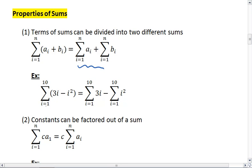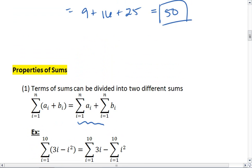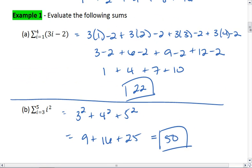For example, if I have the sum from i equals 1 to 10 of 3i minus i squared, I can split this apart into the summation from i equals 1 to 10 of 3i, minus the summation of i equals 1 to 10 of i squared. There's a lot of times when this is going to make the problem easier for us. We like being able to split sums.